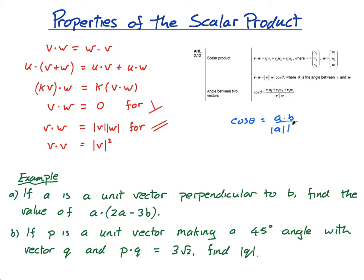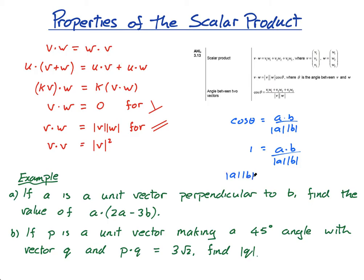I'll explain quickly why that's the case. If cos(theta) equals a dot b over magnitude of a times magnitude of b, well, if you have two vectors that are parallel, what's the angle between them? It's zero — there is no angle because they're basically the same line or same direction. So if the angle is zero, the cosine of zero is one. So you're left with: one equals a dot b over magnitude of a times magnitude of b. Multiplying across gives: magnitude of a times magnitude of b equals a dot b. So that's the rule for parallel vectors.